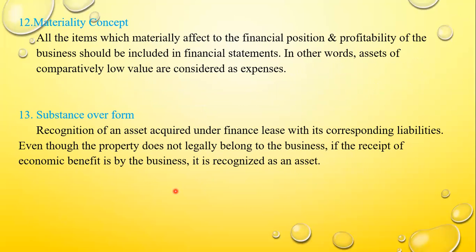Number twelve is the materiality concept. All items which materially affect the financial position and profitability of the business should be included in financial statements. In other words, assets of comparatively low value are considered as expenses. For example, when you take a stapler machine — though you can use it more than one year, we still consider it as an expense and enter it under administration expenses or stationery.